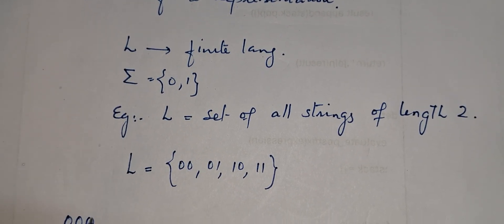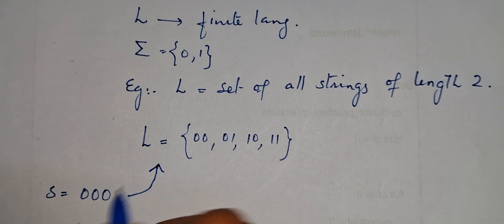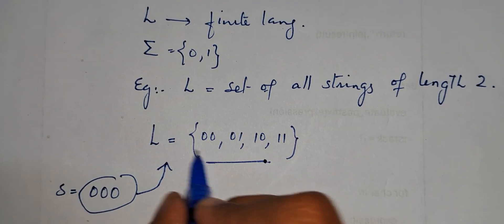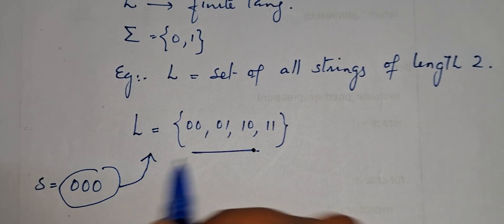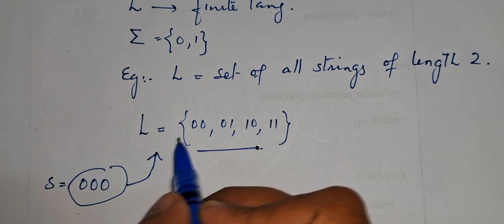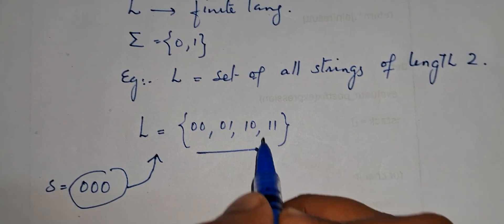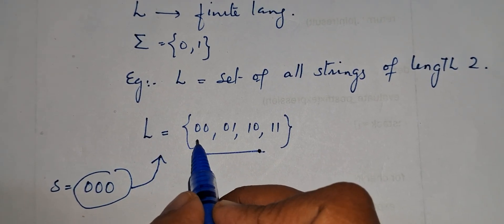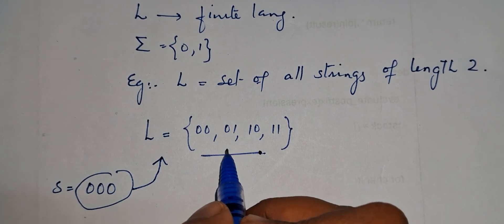Suppose I want to search the string s = 000 — I check whether this string is present in the language. We check 000 with 00 — not equal; 000 with 01 — not equal; 000 with 10 — not equal; 000 with 11 — not equal. So we can say this string is not present in this finite language. In the case of a finite language, it is easy to check whether a string is present or not.